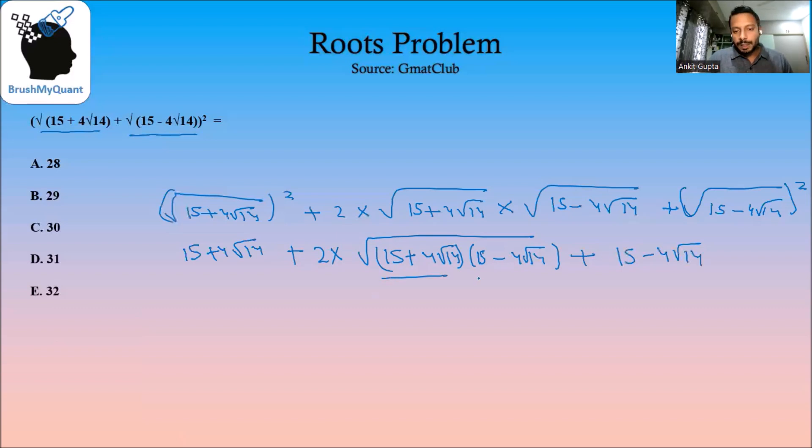So this is of the form a plus b times a minus b. So this becomes a squared minus b squared. So this becomes square root of 15 whole squared minus 4 root of 14 whole squared.